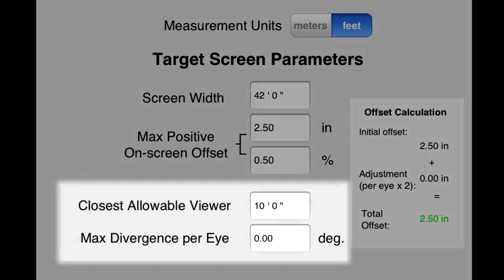Underneath the max positive offset are two additional entry fields, closest allowable viewer and max divergence per eye. These are optional features which you may or may not want to use based on your own personal philosophies about what makes good stereo.